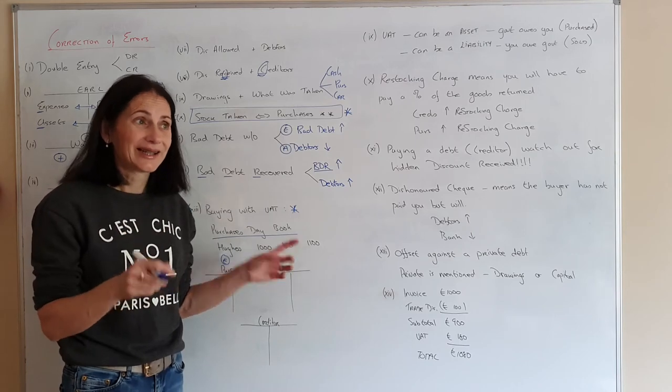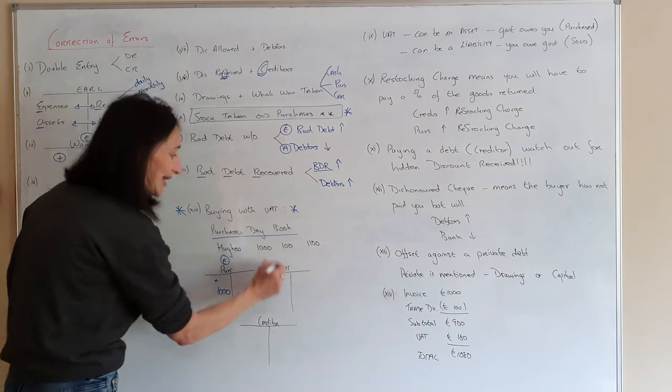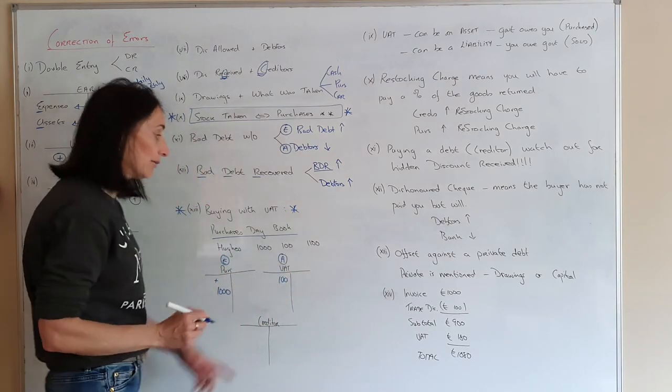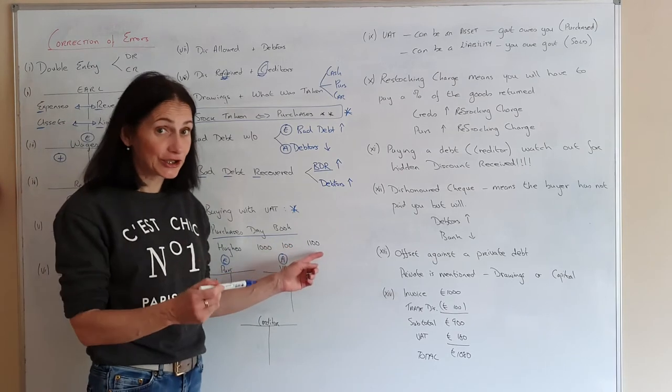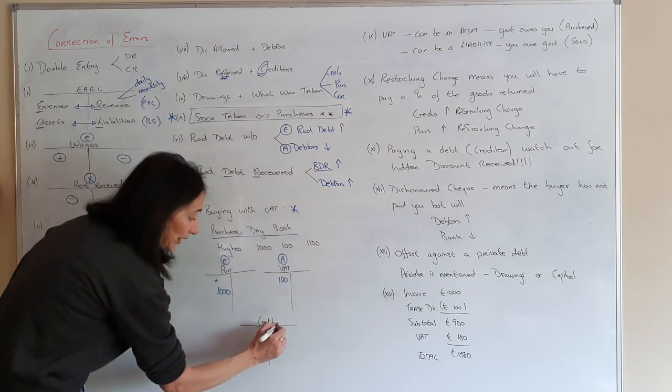Okay. So you're going to get a hundred euro back from the government. That's a good thing. So that's something the government owe you money. So it's an asset. So it should be on this side. Now how much would you have to pay?